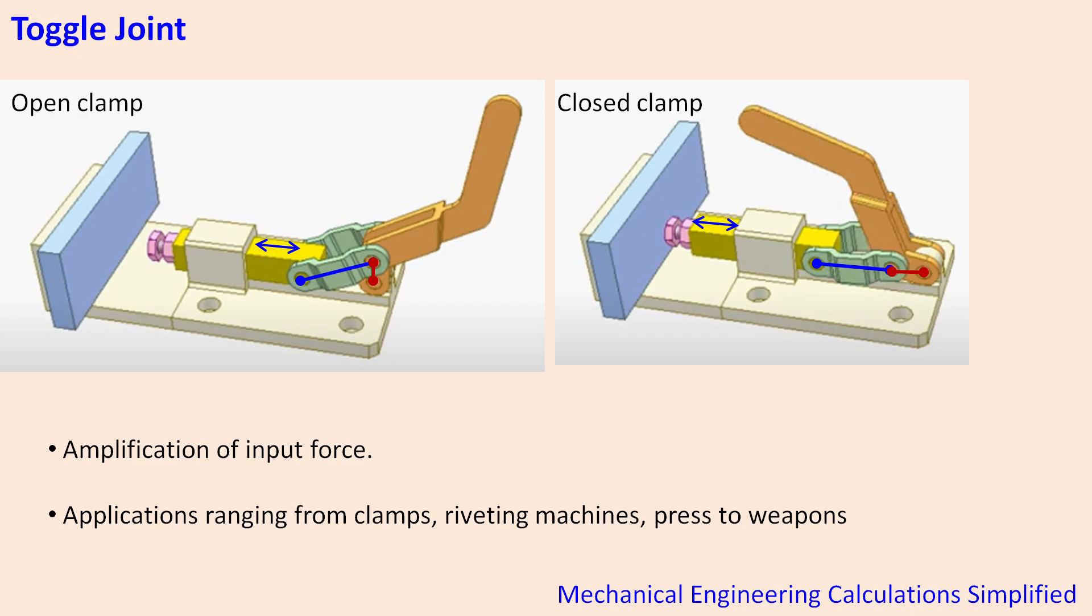In this particular example, the objective is to clamp the blue color part in the clamp with a manual force. Now this manual force is being applied on a lever here, and as you can see the mechanism is very simple in a way it has only two links and these two links are joined together with pinned joint and these two links are then joined on the base.